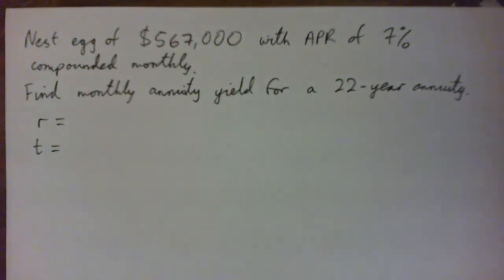Hi everybody, let's go over this question. So you've got a nest egg of $567,000, so you'll save up to that, maybe you're age 65 or retirement age anyway.